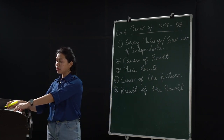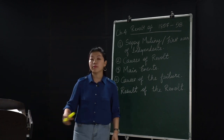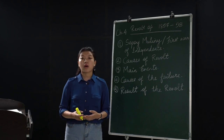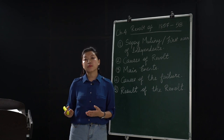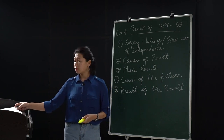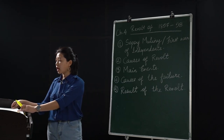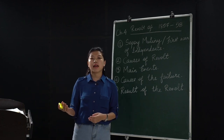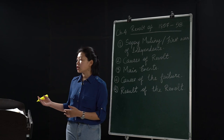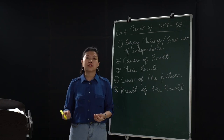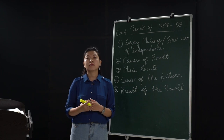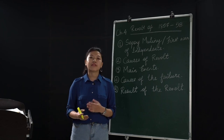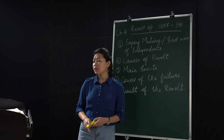Lucknow was another center of rebellion, where the revolt was breaking out outrageously. Finally, Lucknow was recaptured by Colin Campbell, who took the help of a Gorkha contingent led by Jang Bahadur. Together they fought to recapture the state of Lucknow.